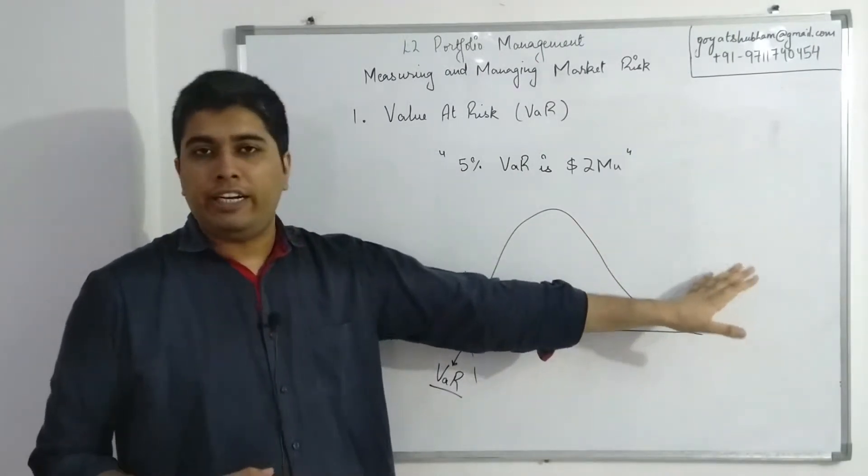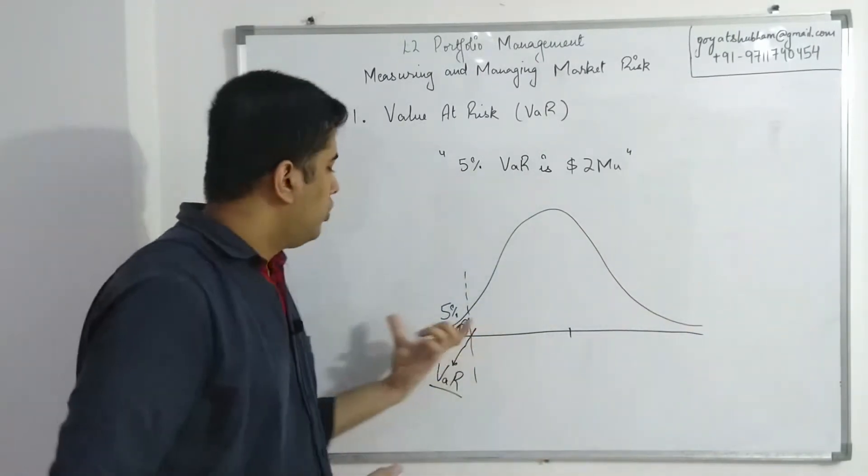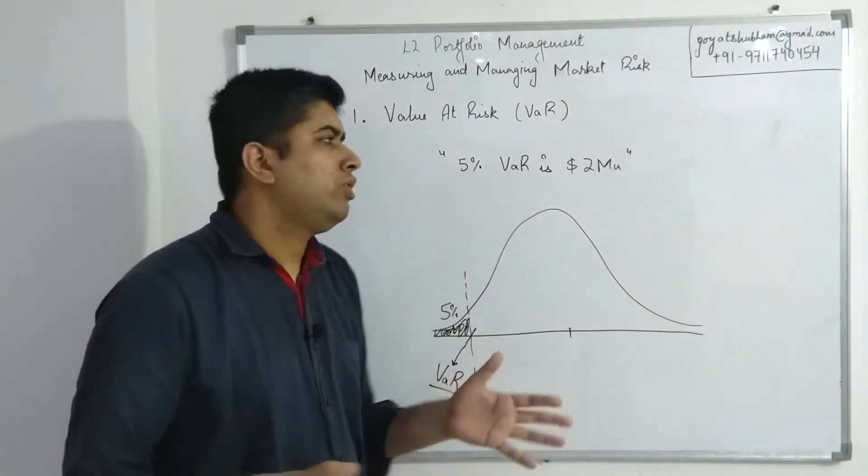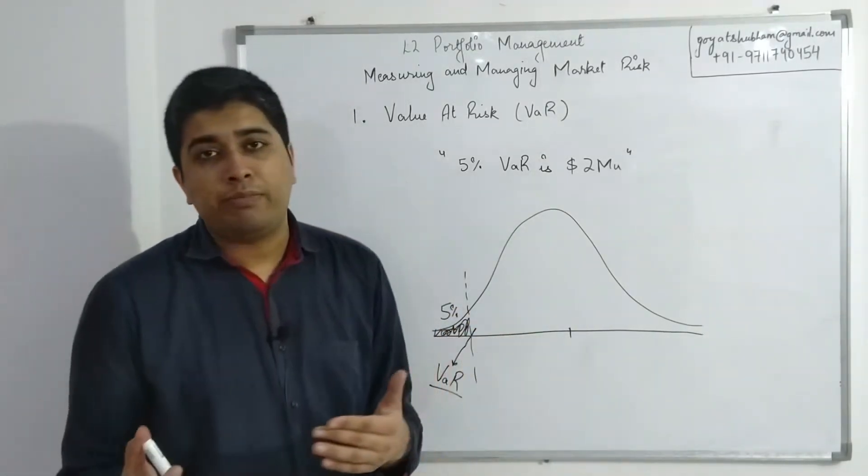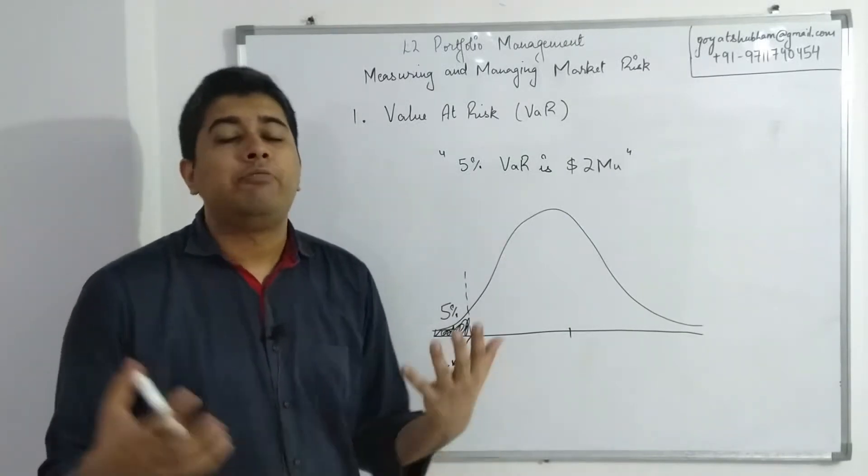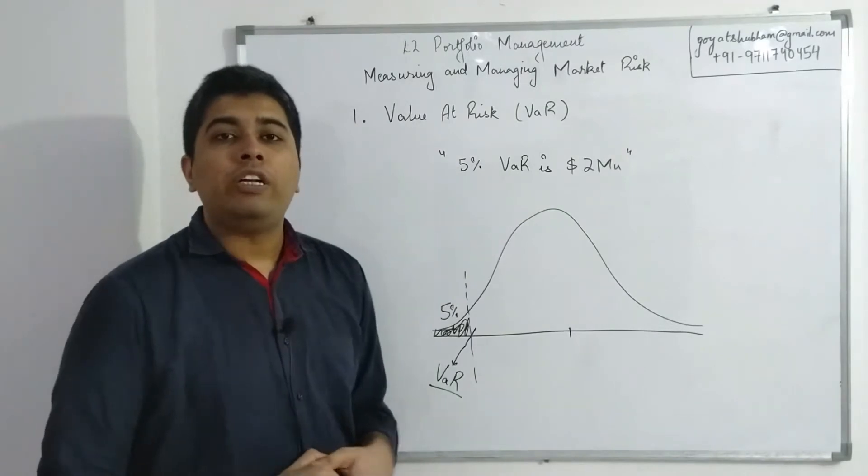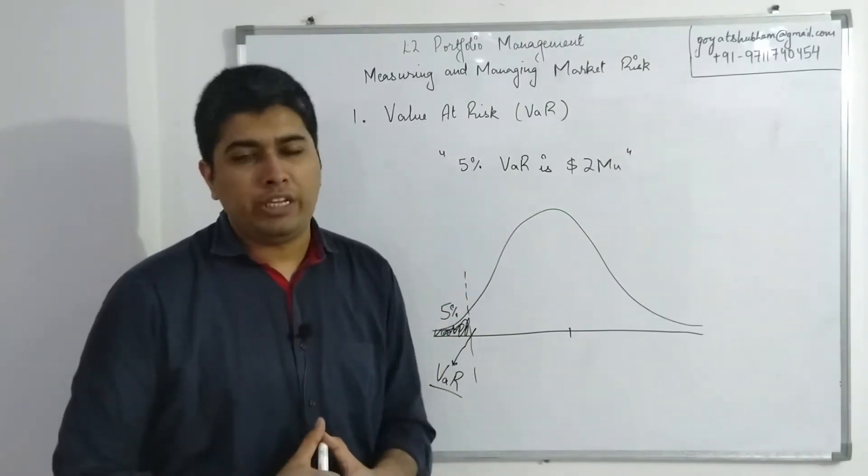In graphical sense, it would always be one tail, and it will be left tail itself, because it's a risk. It's talking about losses. Losses won't be on the right tail; right tail normally represents profits. So left tail, you pick up an area. Area would generally be specified—you could have five percent, you can have two percent, one percent, maybe ten percent—and then you just look at that critical point. That critical point is your VAR.